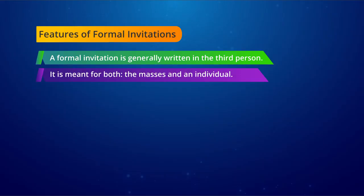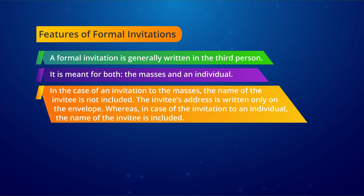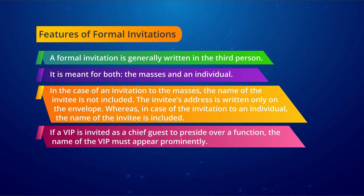A formal invitation is meant for both the masses and an individual. In the case of an invitation to the masses, the name of the invitee is not included — the invitee's address is written only on the envelope. Whereas in the case of an invitation to an individual, the name of the invitee is included. If a VIP is invited as a chief guest to preside over a function, the name of the VIP must appear prominently.